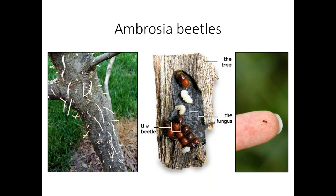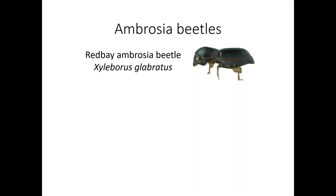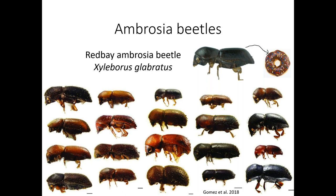This matters because one ambrosia beetle in particular — the red bay ambrosia beetle — is very important to the southeastern U.S. and possibly beyond. It's not much larger than a sprinkle on a donut, making detection difficult. This also illustrates how much the folks at customs and ports are working to find these things — it's a difficult job with so much material to constantly inspect.